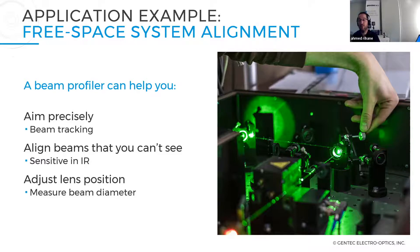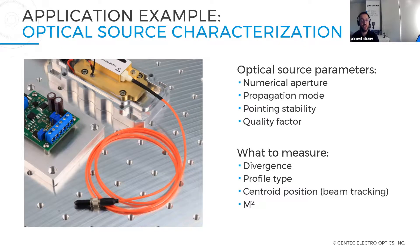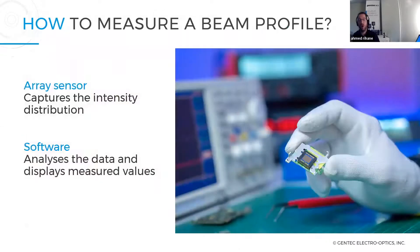A beam profiler is also very useful when working with wavelengths you cannot see, which is helpful for adjusting and aligning your beam. Another application is optical source characterization, where you need to know the numerical aperture, divergence, mode — multi-mode or single-mode — and pointing stability. You can do that by measuring divergence, profile type, and center position.